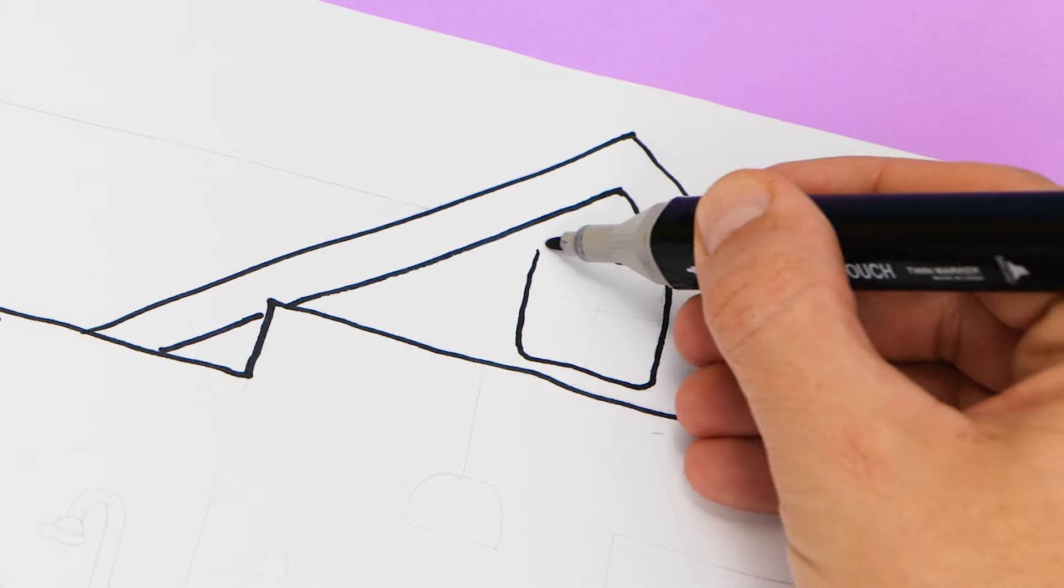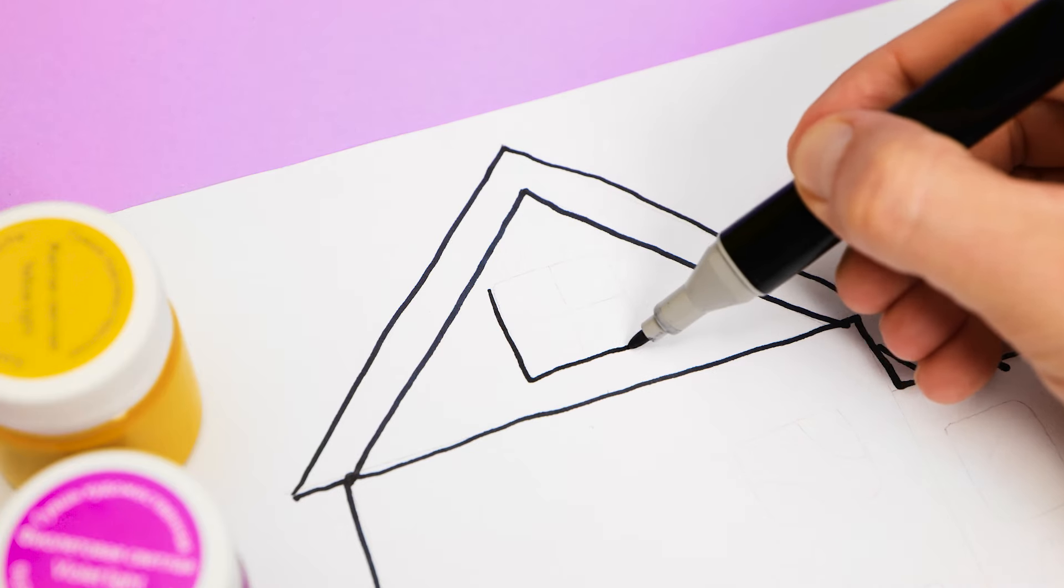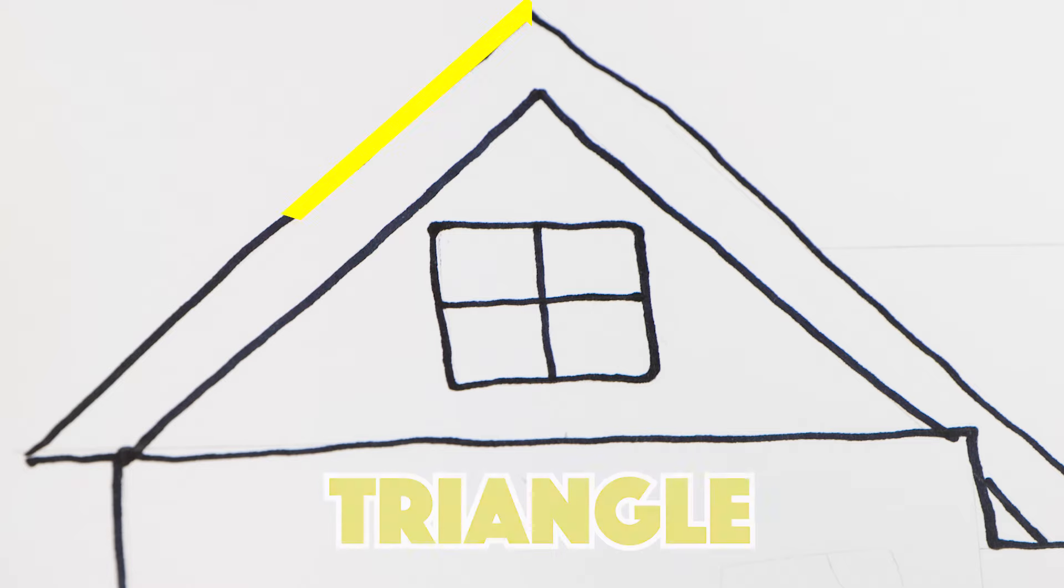Well done, Emily! Now tell me, what shape is hiding on our roof? It's a triangle.